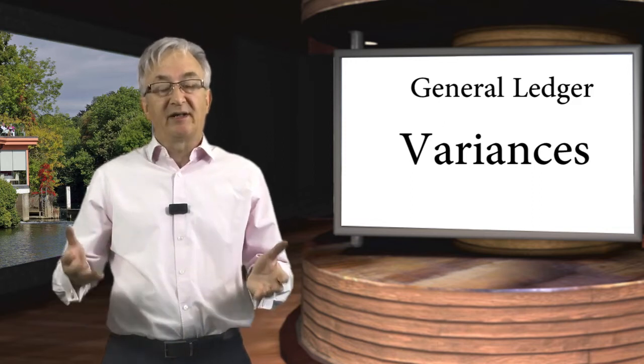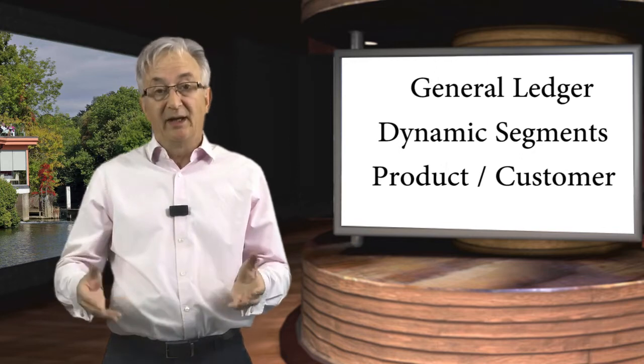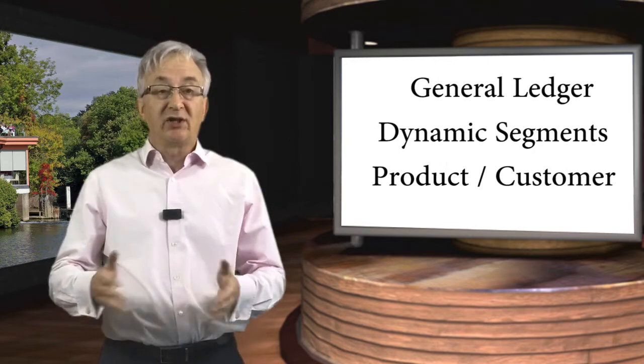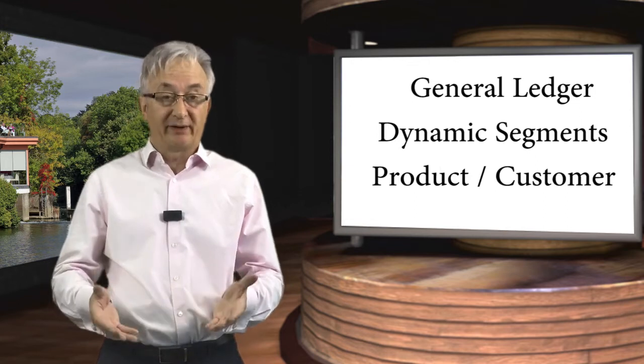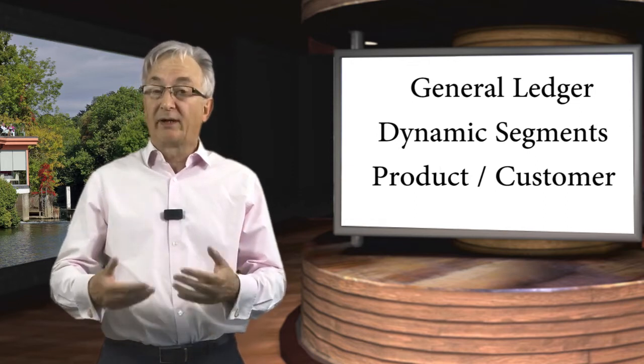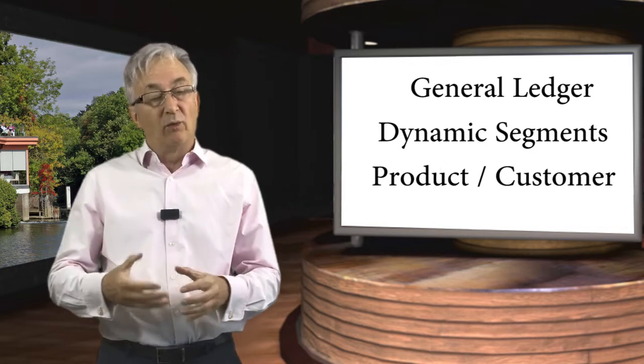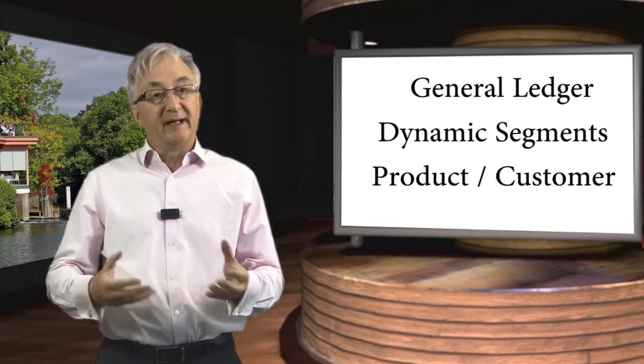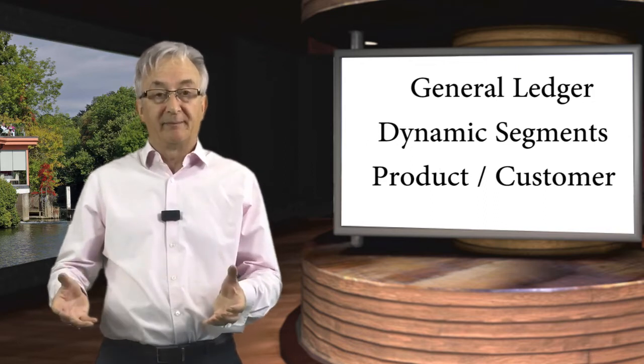The only way you can do this is having a dynamic segment in product and customer in the general ledger. You can actually change the posting rules to get all these variances automatically posted to the correct product and the correct customer. And I'll be doing another video on that with one of our business partners explaining a little bit more about how you can change the posting rules to make this happen automatically.